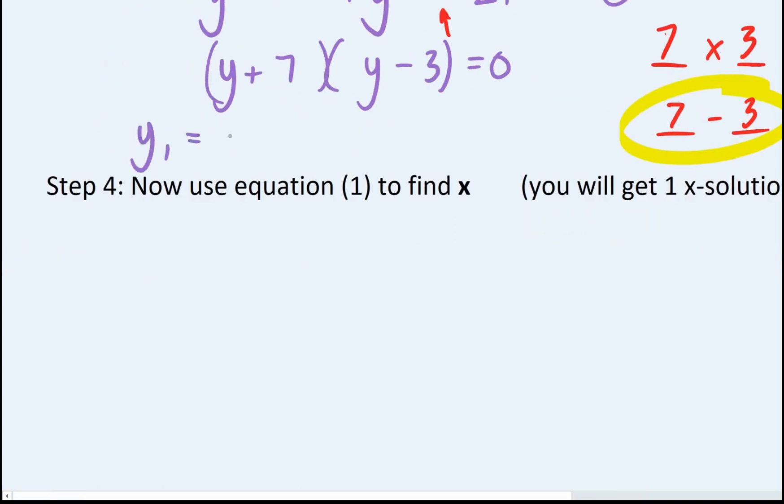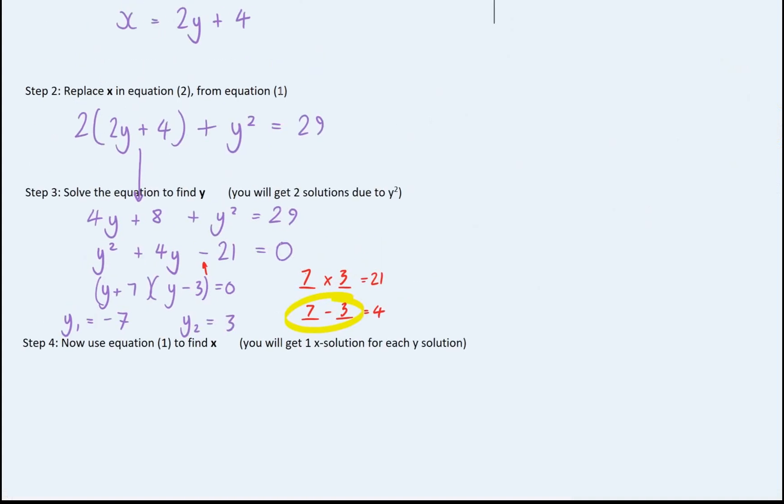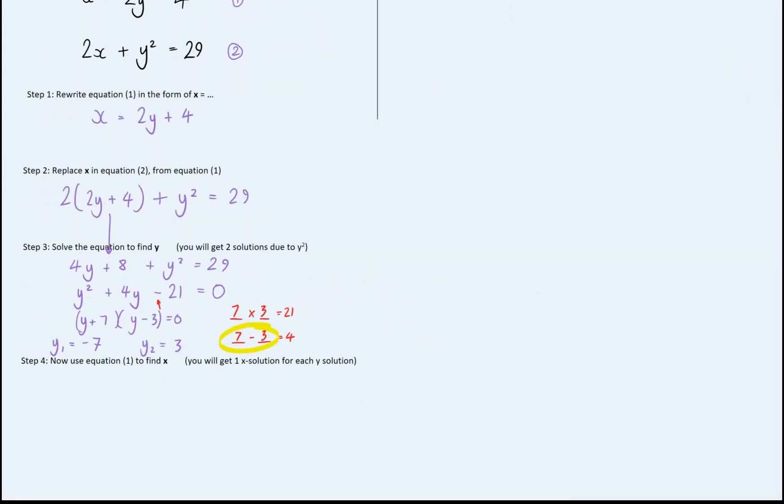My first solution, y1, is going to be called minus 7. And my second solution, y2, is going to equal 3. Now we've done that. We need to go to my earlier equation to work out the values of x.